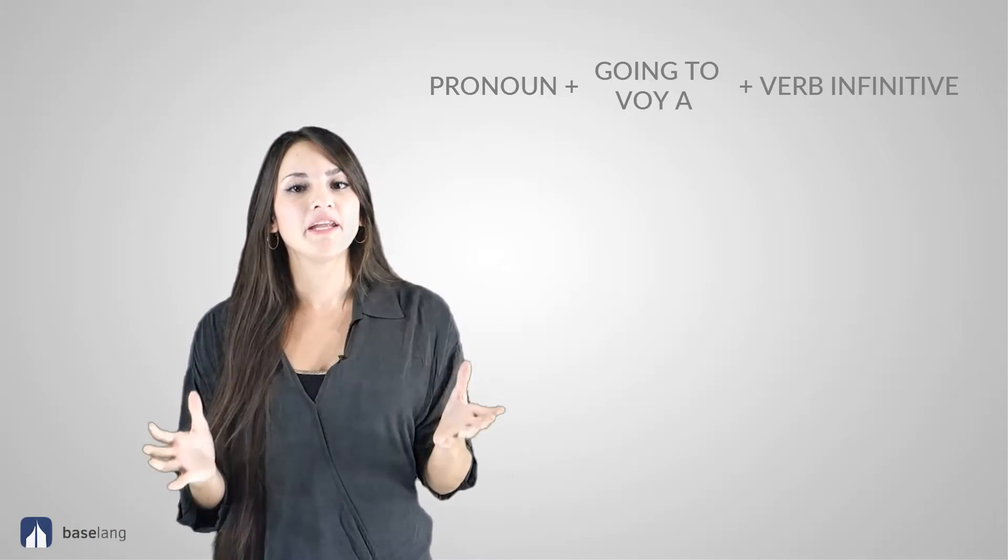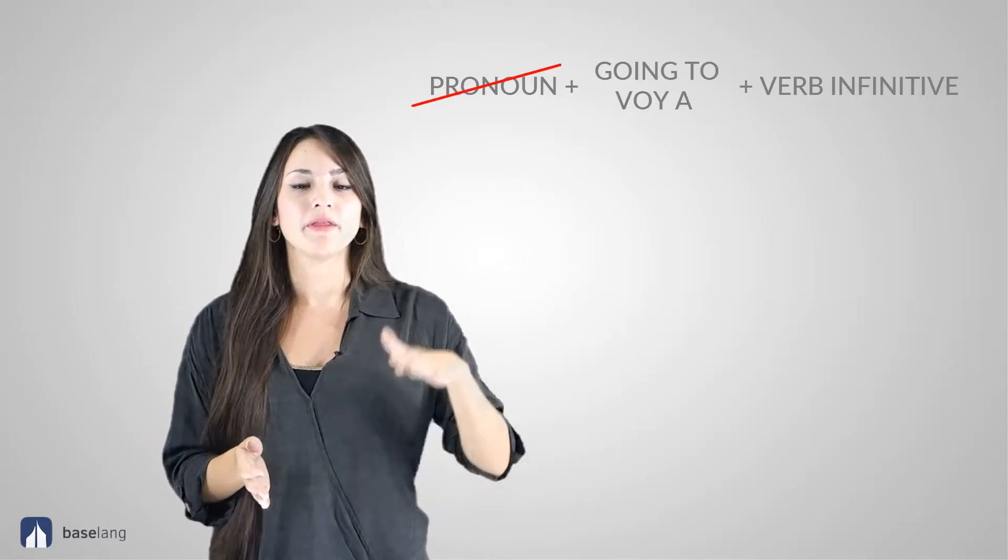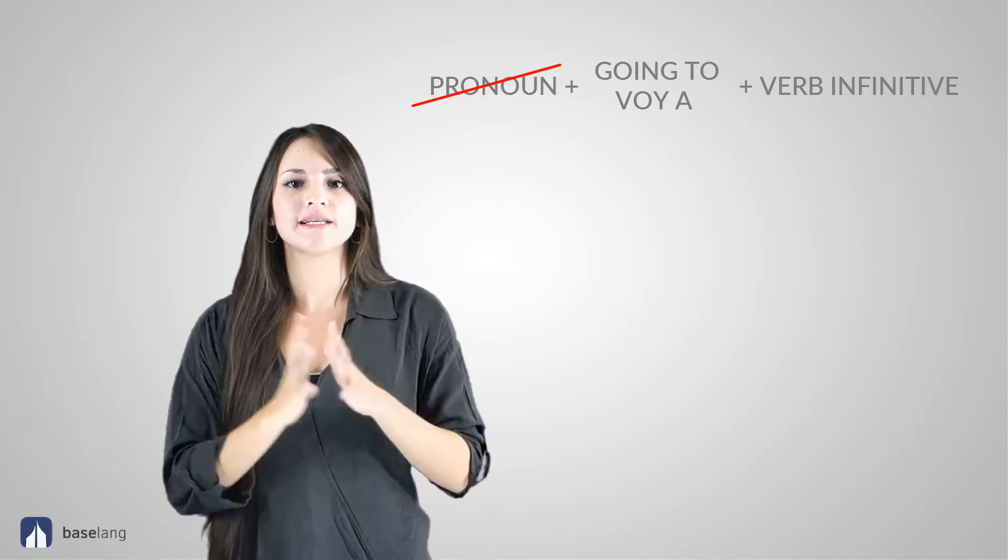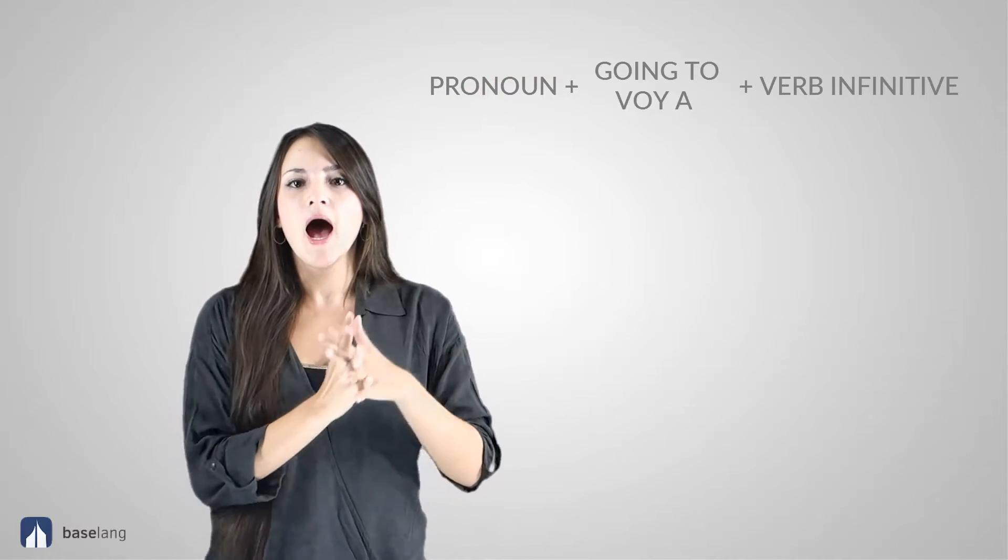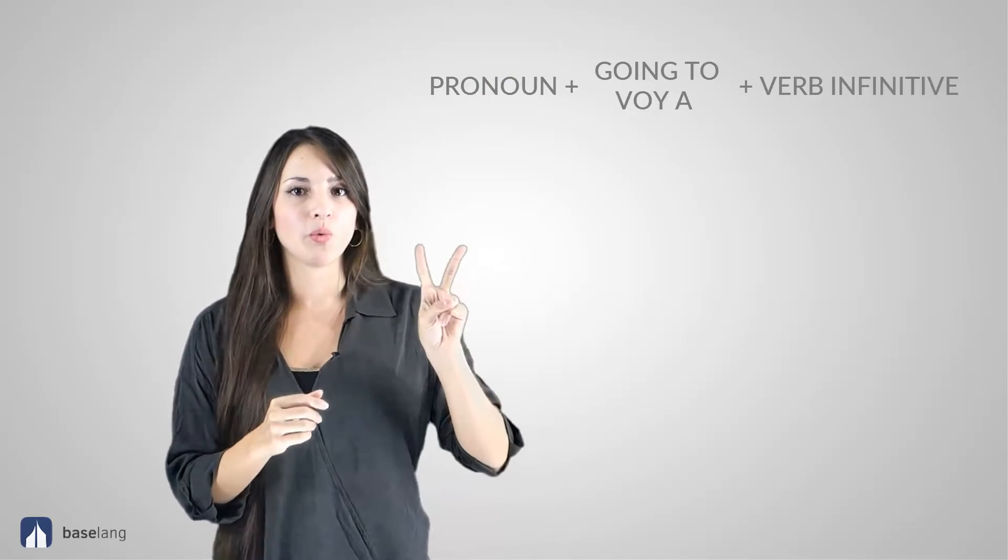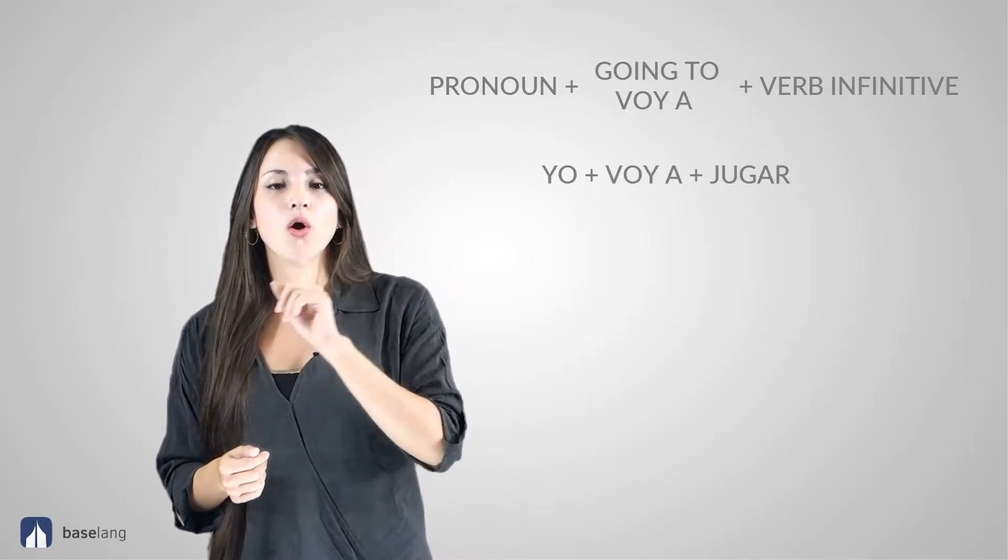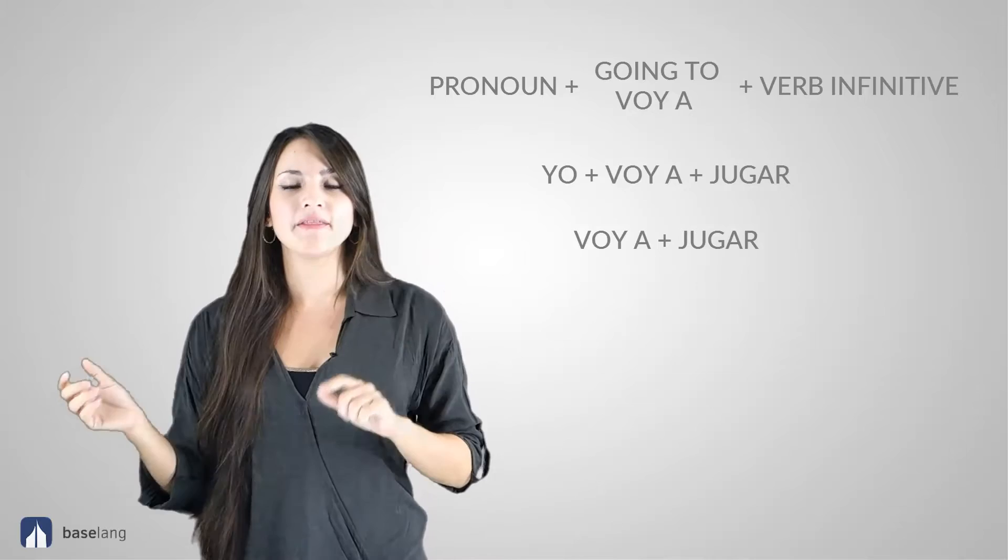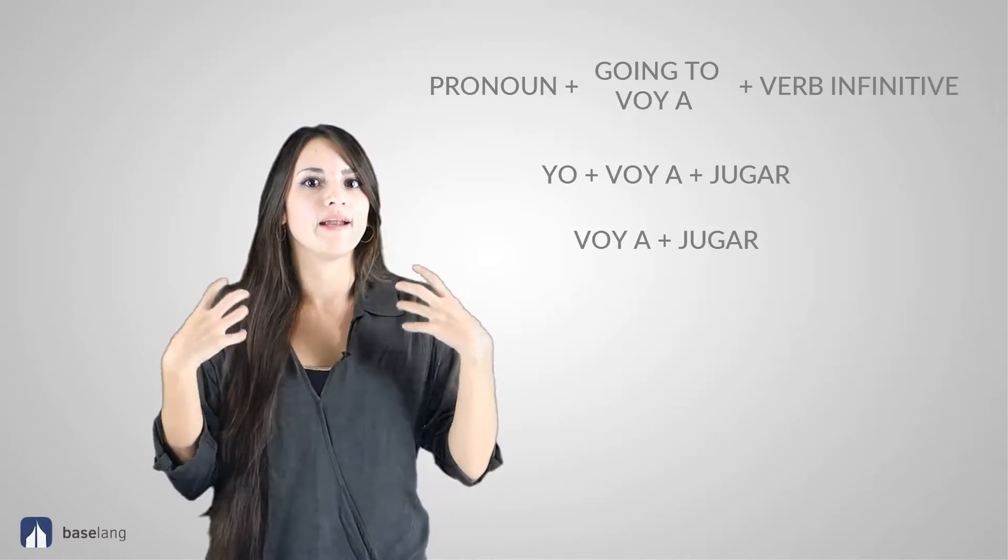As in many verbs, we can just drop the pronoun and say the rest of the sentence. For example, if I want to say I'm gonna play, in Spanish there are two ways: yo voy a jugar, or voy a jugar, and the second one even sounds more natural. So basically the structure is the conjugated form of the verb ir, then we add an a, and then we have the infinitive verb. You just remember to choose any other verb you want.